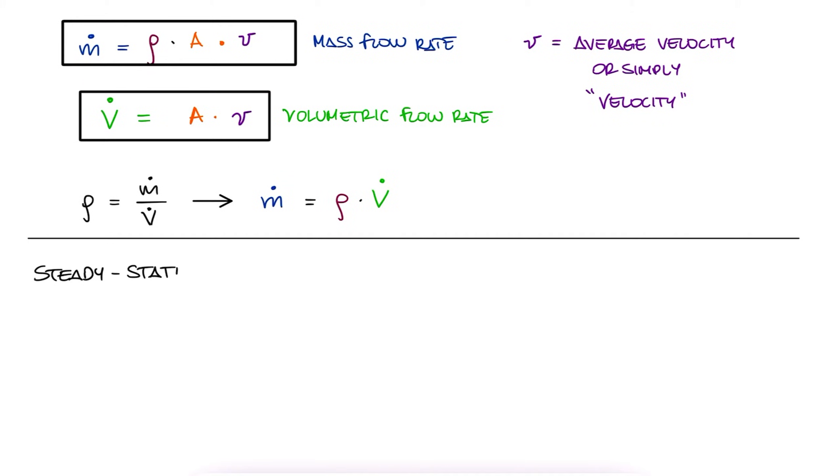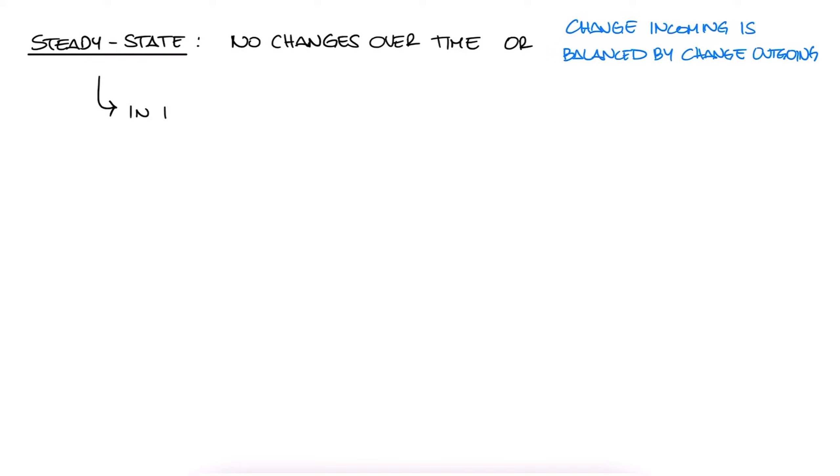Now, the term steady state refers to when our system doesn't change over time, or when change in one direction is continually balanced by change in another. So specifically for thermodynamics and open systems, steady state means that the sum of mass flow rates entering is equal to the sum of mass flow rates exiting.